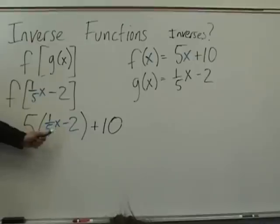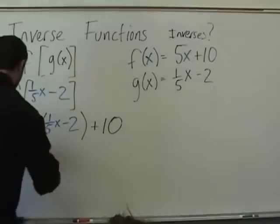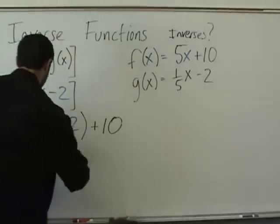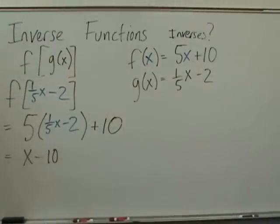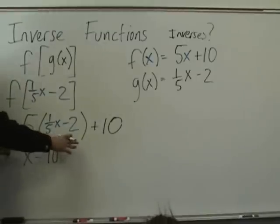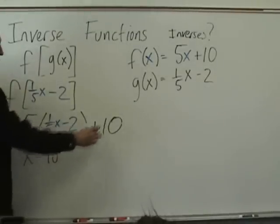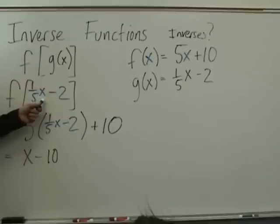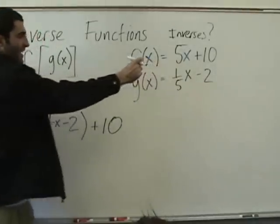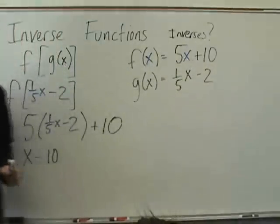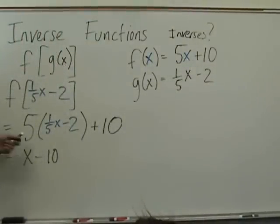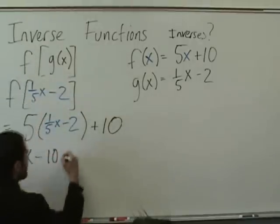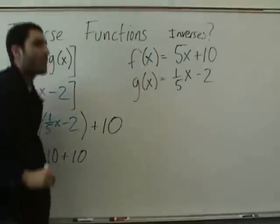So f of g of x equals x. So far, so good — we're halfway done. Now we have to do it the other way. Is it possible that one checks and the other does not? It's possible that one checks and the other does not.